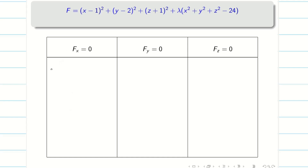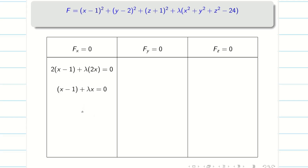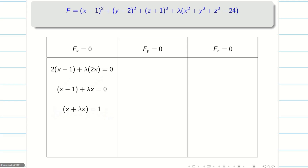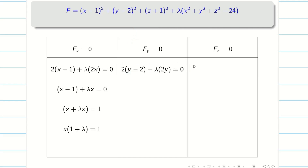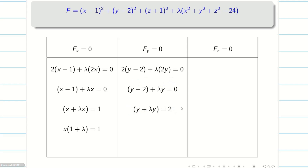Differentiating F partially with respect to x gives 2(x−1) + λ·2x = 0. Taking 2 outside: assembling x and λx, pushing −1 to the other side gives x(1 + λ) = 1. Similarly, differentiating with respect to y gives 2(y−2) + 2λy = 0, and taking y terms together gives y(1 + λ) = 2. Finally, differentiating with respect to z: 2(z+1) + λ·2z = 0, and assembling z and λz gives z(1 + λ) = −1.